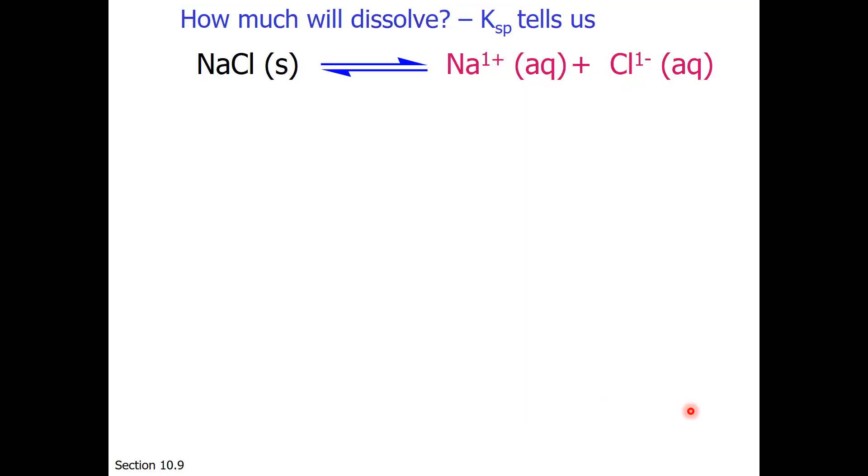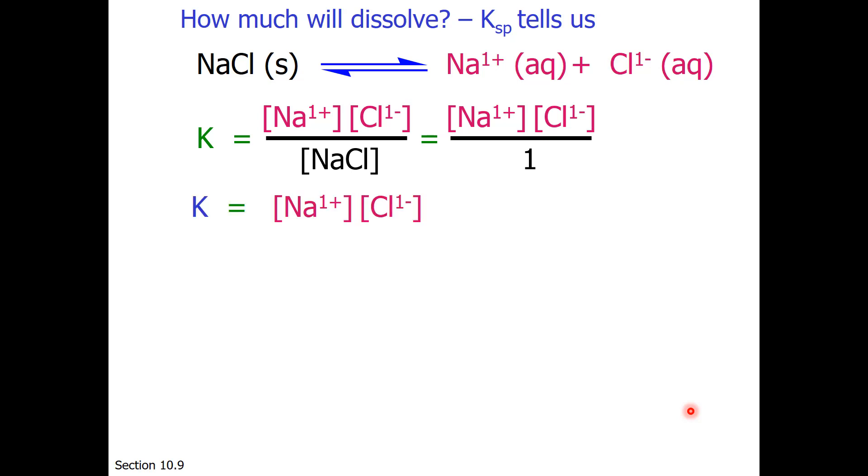If we want to know how much of a material will dissolve, the equilibrium constant tells us. Let's consider sodium chloride dissolving in water. Sodium chloride is very soluble in water, but at some point you'll reach the limit. The equilibrium constant for this is going to be sodium ion times chloride ion over sodium chloride, which of course you remember that solids have an activity of 1, so only the aqueous materials will be included in this equilibrium constant. So K is equal to the cation times the anion concentration, and we give this a special name. This is known as the solubility product constant, and it is an equilibrium constant for solubility.